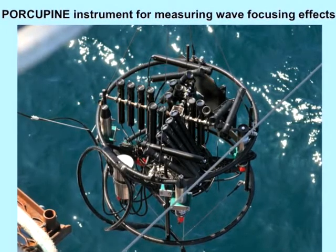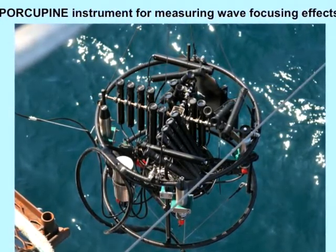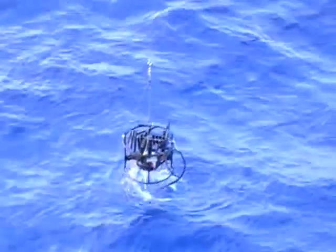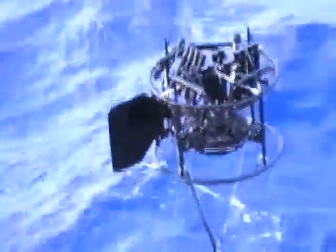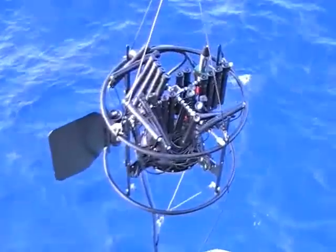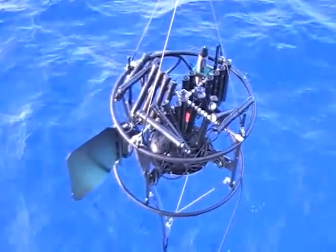The porcupine instrument consists of over 20 optical sensors looking upwards in different directions. It has a unique capability to sample underwater light fluctuations with a very high frequency — each optical sensor makes 1000 measurements per second. We use these data to calculate the statistical characteristics of light fluctuations and relate them to environmental conditions, including the properties of surface waves.